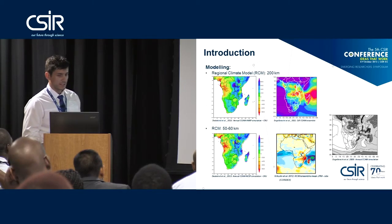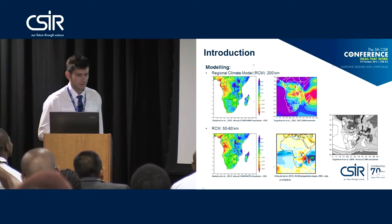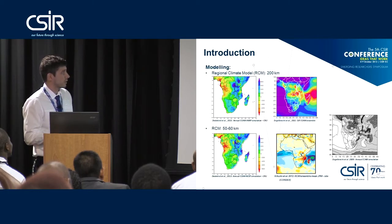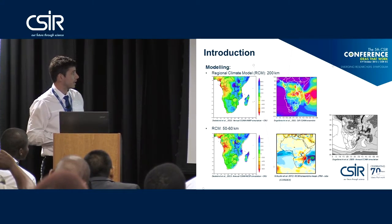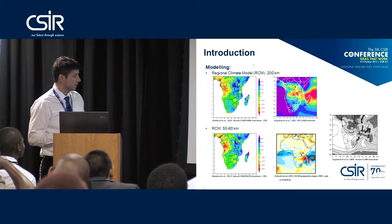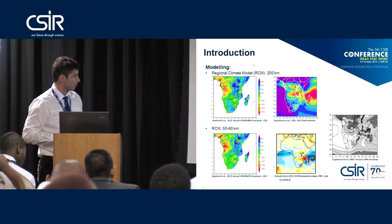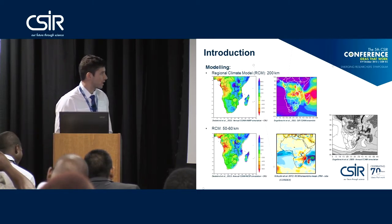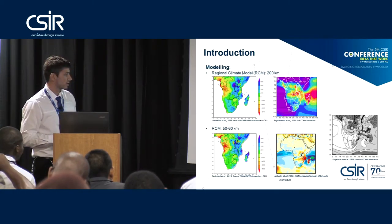With regards to what modeling has been done already, we have regional climate models. We've downscaled models from 200 kilometers horizontal resolution to 50 kilometers. With the 200-kilometer runs, models tend to overestimate rainfall quite severely over steep topography. When we used models with a resolution of 50 to 60 kilometers, the models start to capture cumulus convection much better, and the overestimation is not as severe.